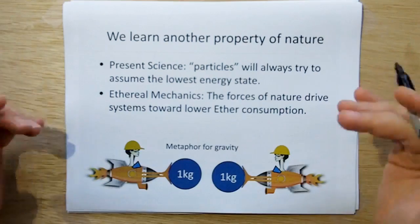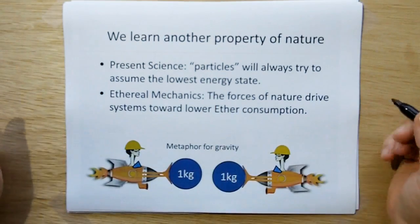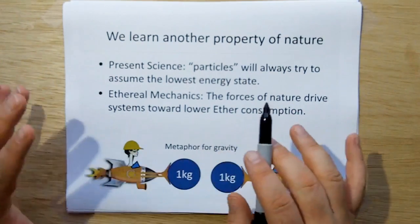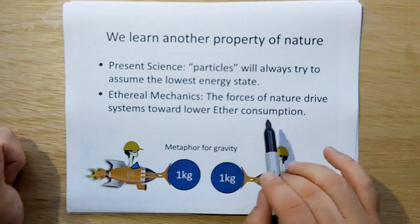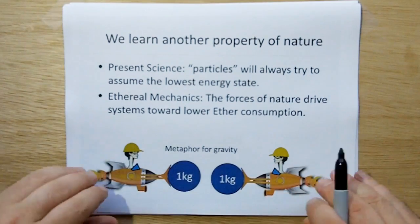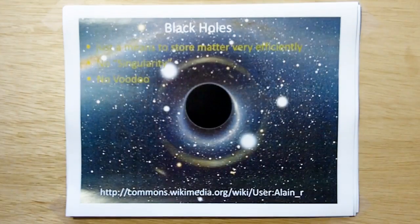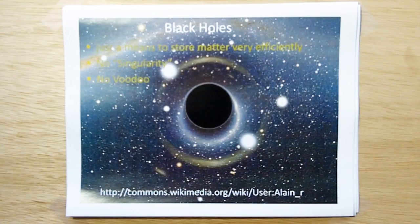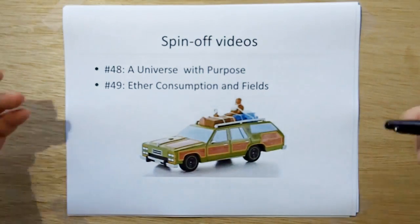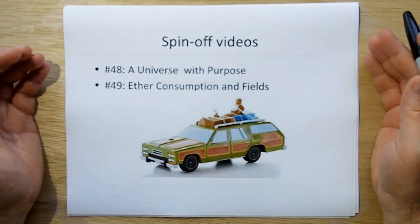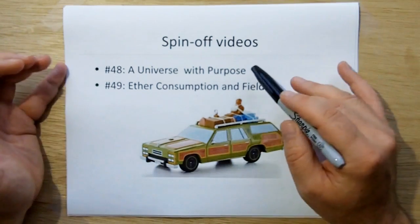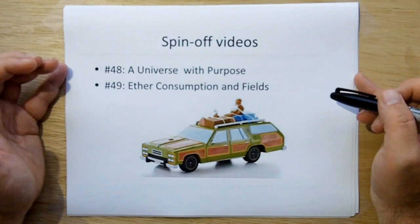And in present science, and this is our new property that we're coming up with, the present science says particles will always try to assume the lowest energy state. It's great that these particles have sentient brains and know how to do that. In ethereal mechanics, it's much simpler. The forces of nature drive systems toward lower ether consumption. And this here is a metaphor for gravity using ether bots. And black holes are just a means to store matter very efficiently. There's no singularity, there's no voodoo. This is who made the picture. And because of this realization that the universe goes out of its way to conserve ether, well, I don't know if it goes out of its way, but there's a good conjecture video which is coming up next that describes what is the purpose of the universe.